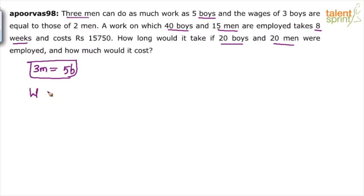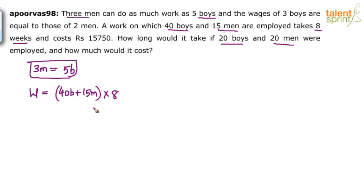Total work equals persons times days. He says 40 boys and 15 men take 8 weeks, so 40 boys plus 15 men — this is the total number of persons — times 8 weeks. Let us assume we are solving the question in terms of number of weeks, so 8 weeks. Total work is number of persons times time.